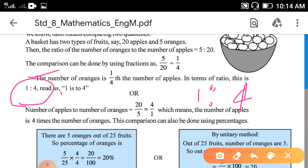It is read as 1 is to 4. If it is written 5:4, then you read it as 5 is to 4. Here, 5 is the number of oranges and 20 is the number of apples.